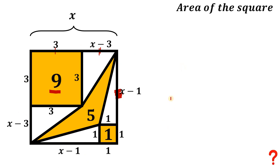The area of this whole figure must be equal to the sum of those areas: the square with area 9, this quadrilateral with area 5, and this small square with area 1. Now notice, if we combine these two congruent triangles, we get a rectangle with lengths x minus 3 and 3. So the area of that rectangle is 3 times x minus 3. Also, if we combine these two congruent right triangles, we have a rectangle with base and height of 1 and x minus 1, so its area is x minus 1 times 1.